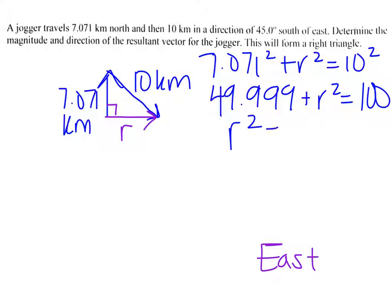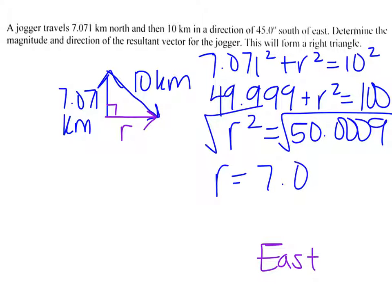That would give you 50.0009 and some other decimals. From there you just need to square root it, and that is going to give you r equals 7.071. So this is your magnitude.